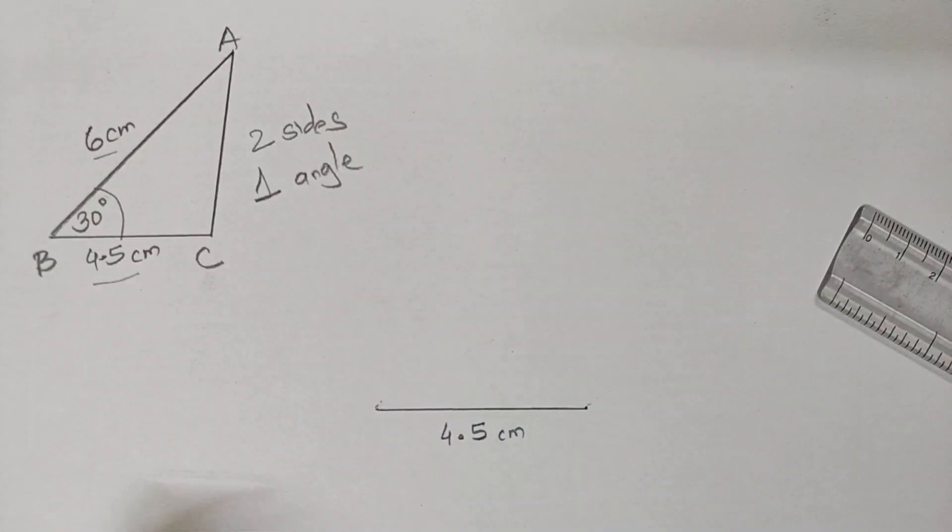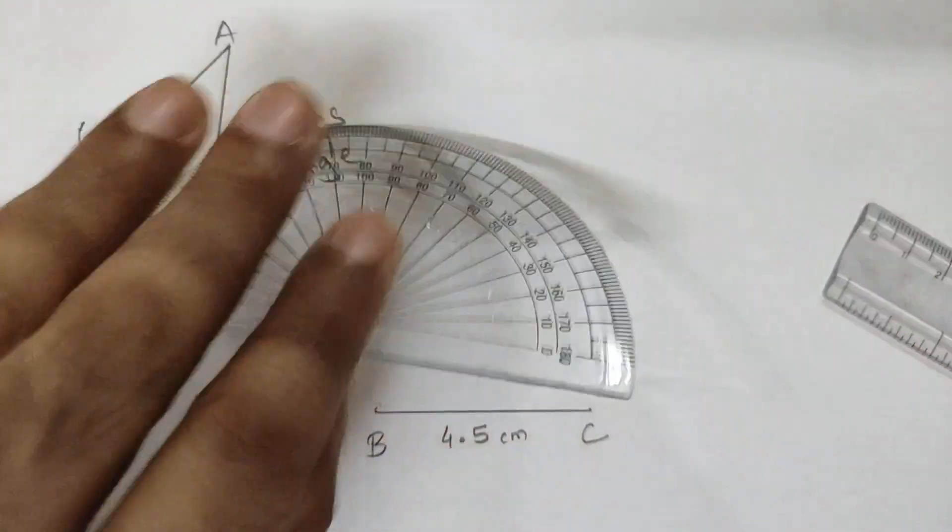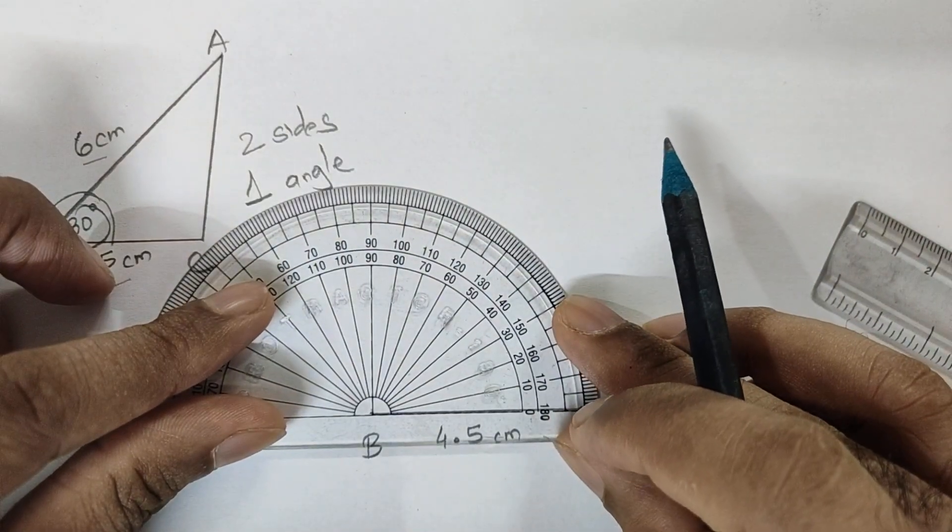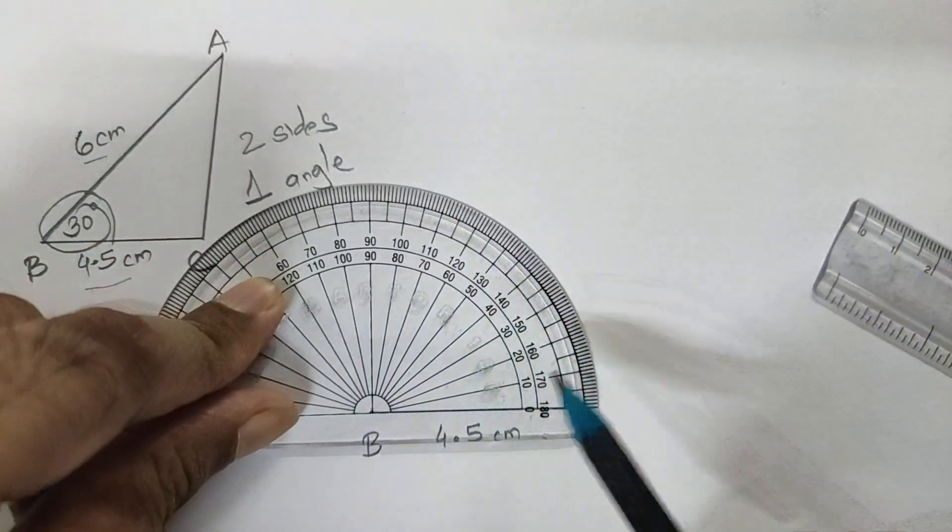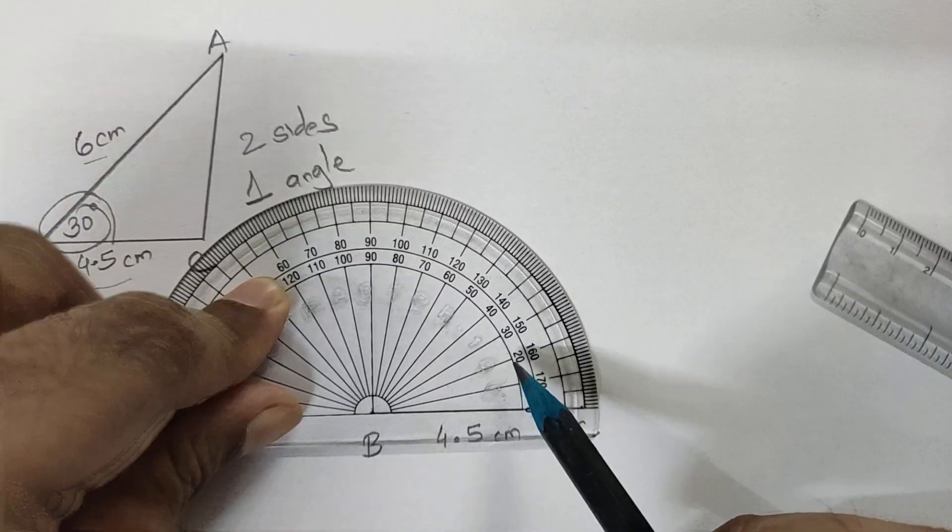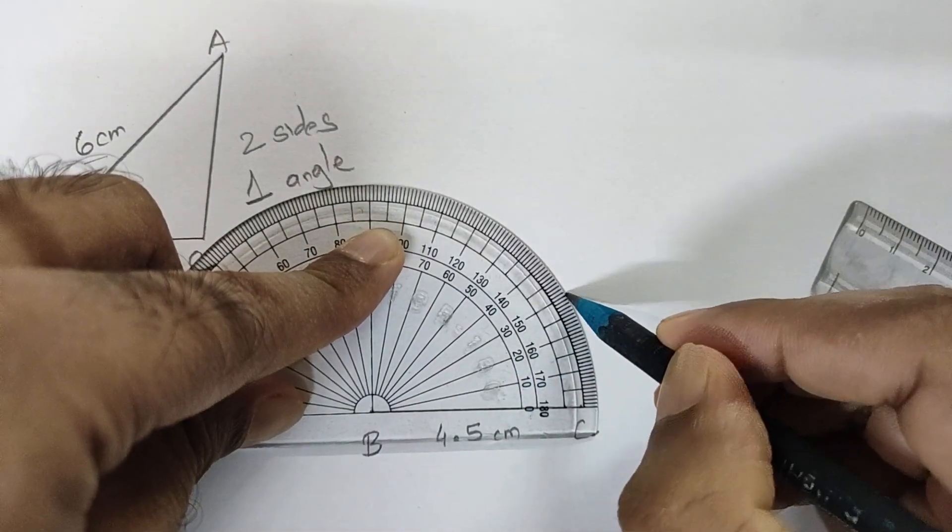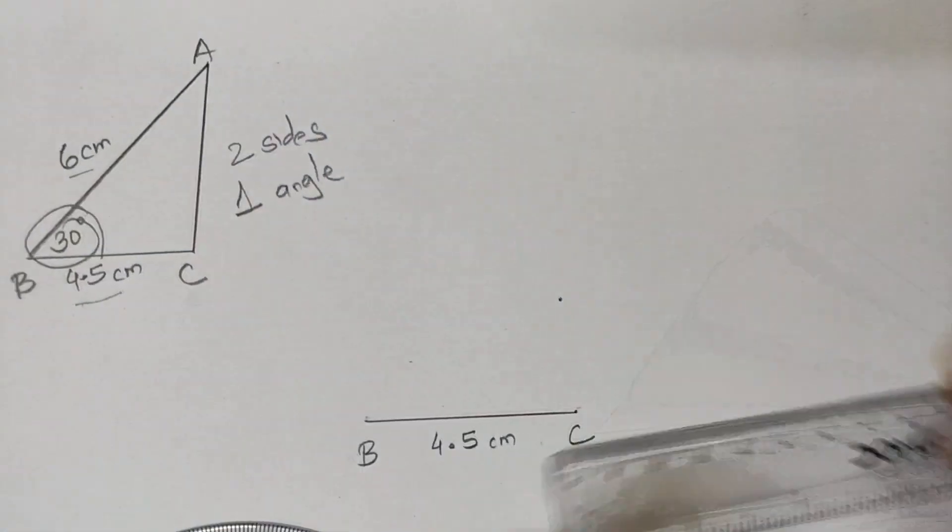Second step is drawing this angle of measure 30 degrees. Place the protractor in this way. Start counting from zero: zero, ten, twenty, thirty. Mark 30 degrees. Join these two points and extend the line.